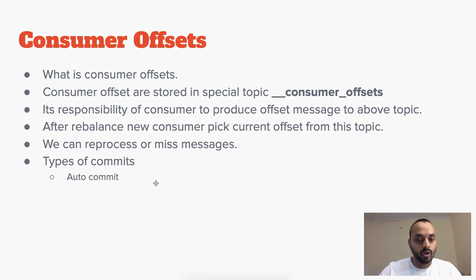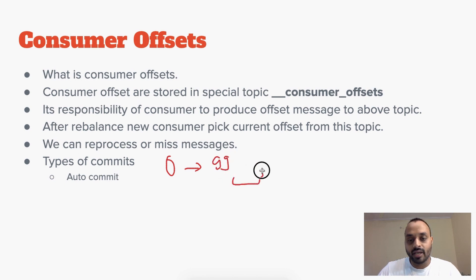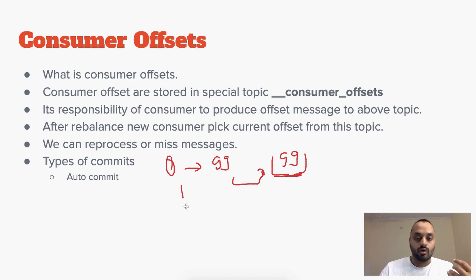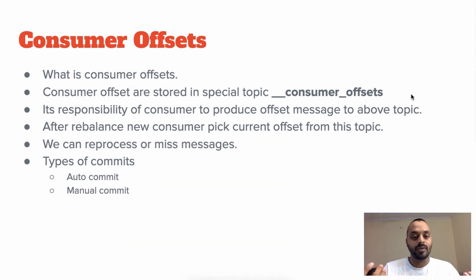Let's say we got messages from 0 to 99 — then 99 will get committed as the latest offset. If we are processing and our consumer fails at offset 1, the new consumer will come and start from 99. So the problem of missed messages will occur. This is the problem with auto commit.